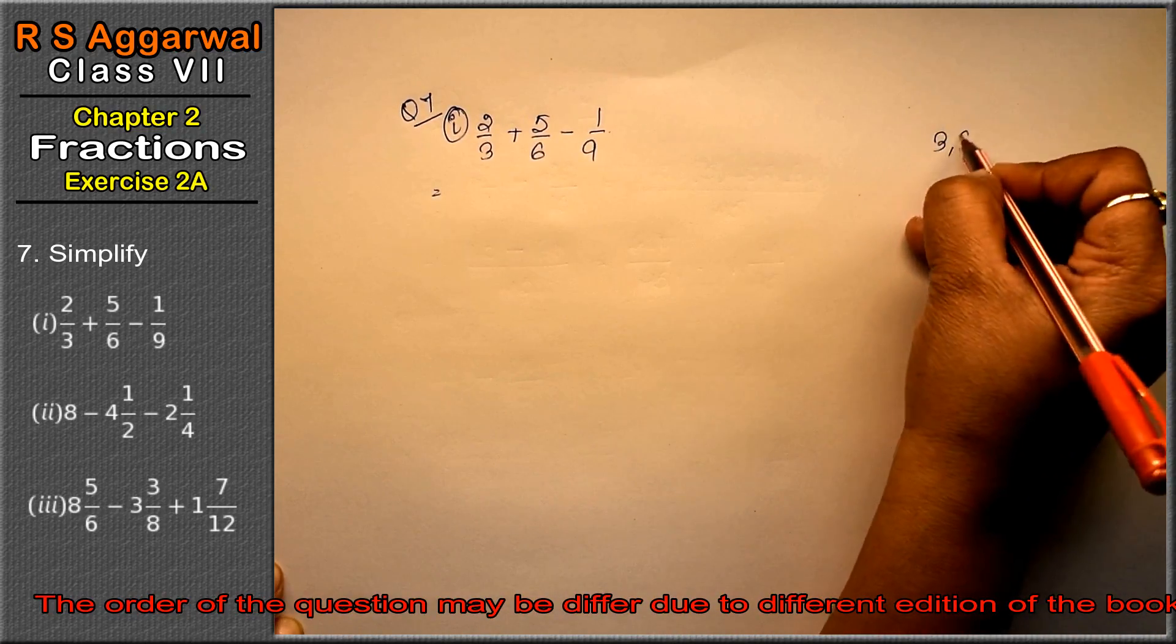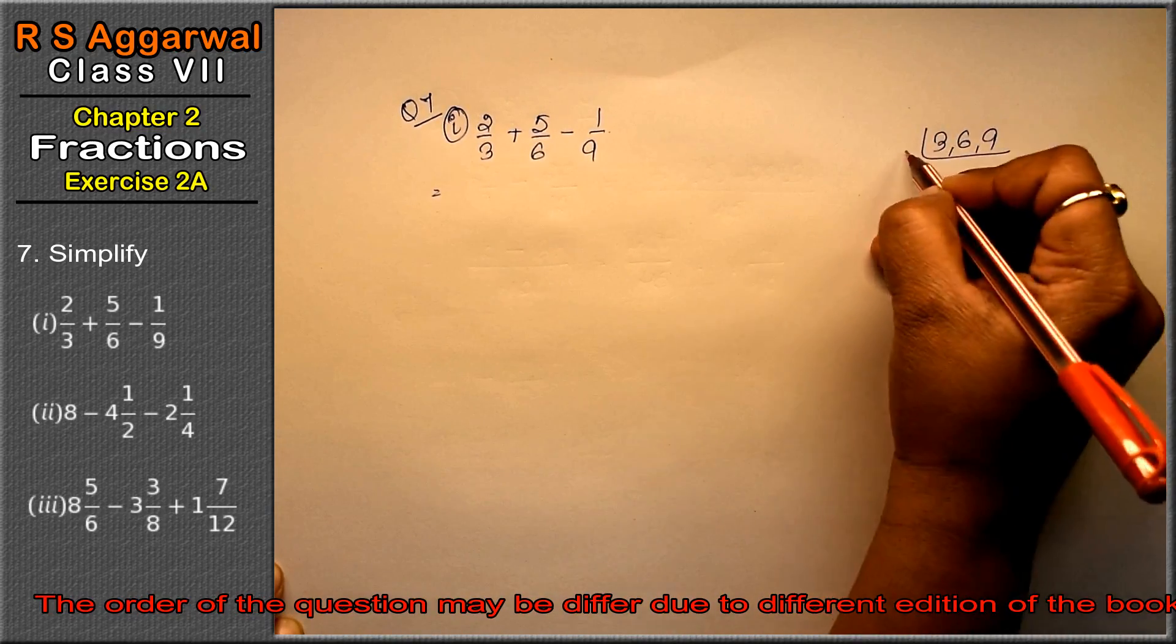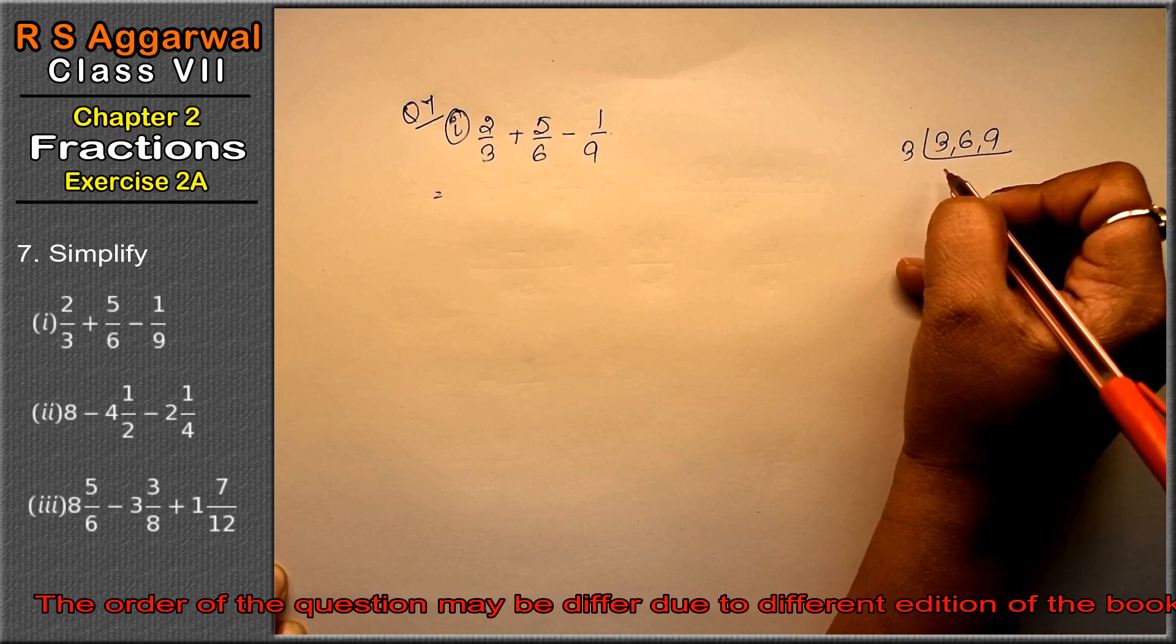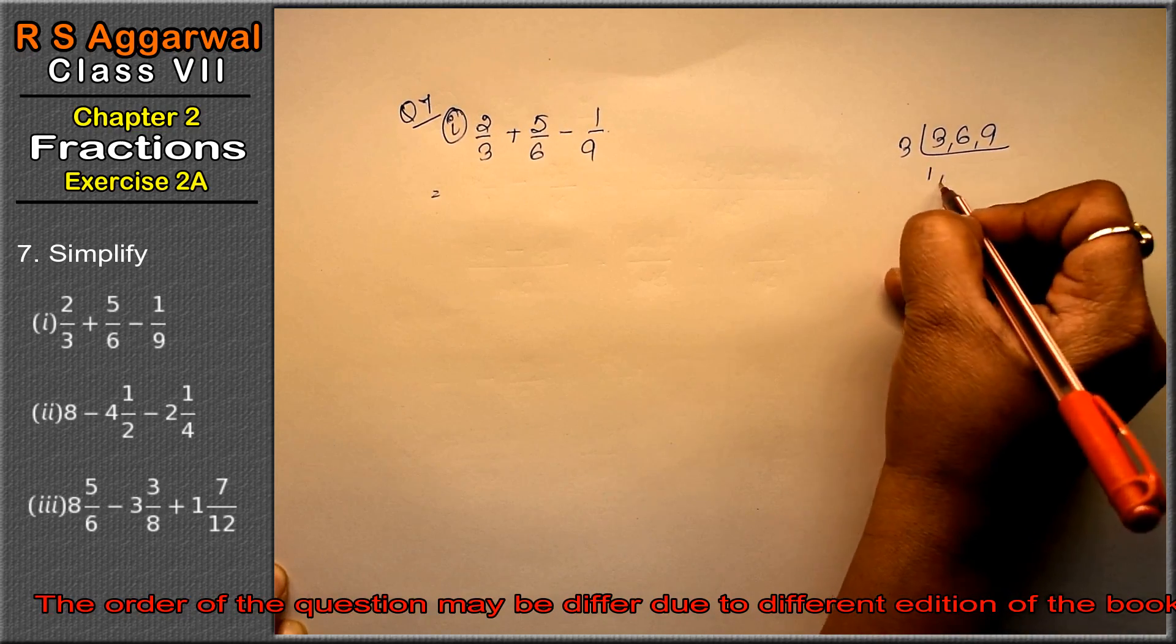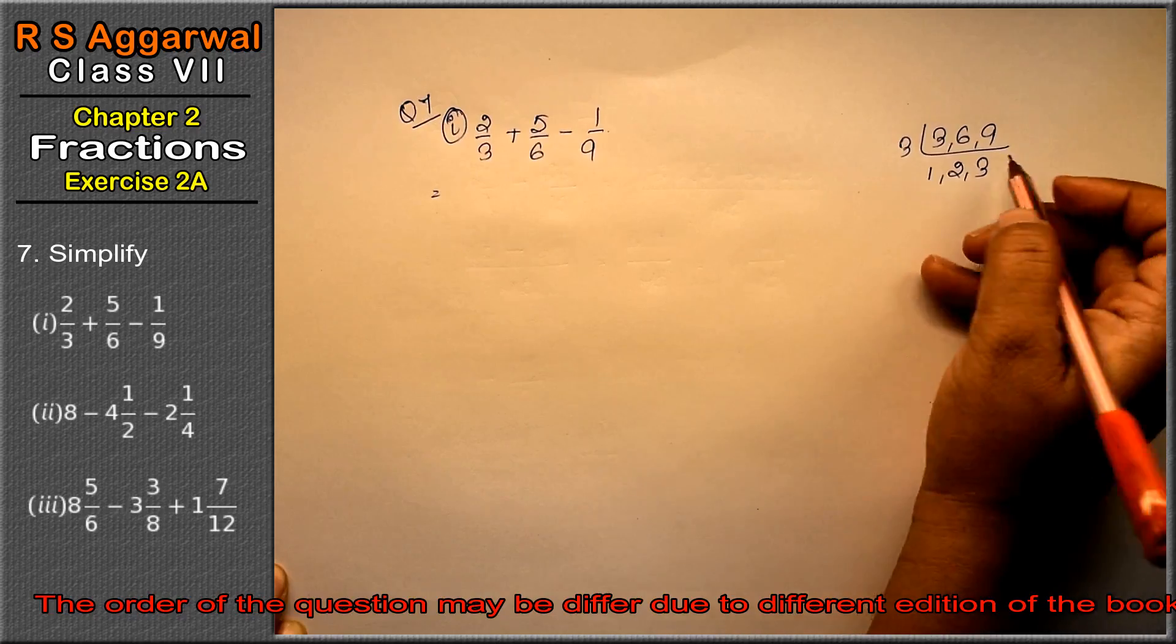Friends, take LCM of 3, 6, and 9. So 3, 1 is 3. 3, 2 is 6, and 3, 3 is 9.